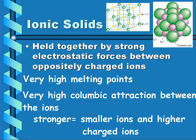Ionic solids have ions at their lattice points and are held together by strong electrostatic forces between oppositely charged ions. They have very high melting points and very high Coulombic attractions between the ions. High Coulombic attraction occurs when we have small, highly charged ions — the smaller the ions and the higher the charge, the stronger the Coulombic attraction.